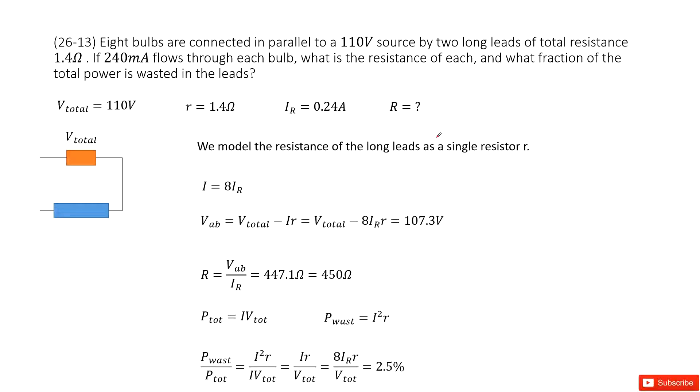Welcome to my channel. I'm Zhang Jingxu. Let's look at problem 13 in chapter 26. Chapter 26 is about DC circuits. We can see we have 8 light bulbs connected in parallel. Keyword, parallel connection.